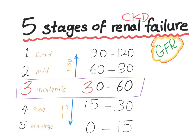The mnemonic to remember that: remember Stage 3 is 30 to 60, then for stages 1 and 2, which come before Stage 3, you add 30. For stages 4 and 5, you subtract 15. So it's pretty simple.